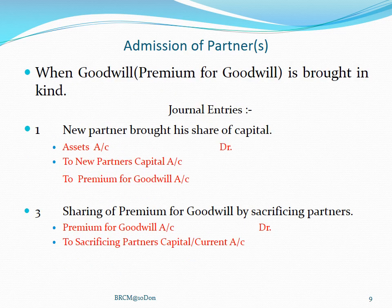Next condition: when the new or incoming partner brings goodwill in kind — not in cash but some asset, like maybe furniture, maybe building, maybe some other asset. In that case, asset account will be debited and premium for goodwill account will be credited. So where we were getting cash earlier, we now receive some asset — this is the only difference. The rest remains the same: premium for goodwill account debited to sacrificing partners' capital or current account, to transfer the share of premium to sacrificing partners.